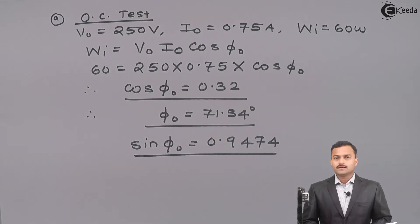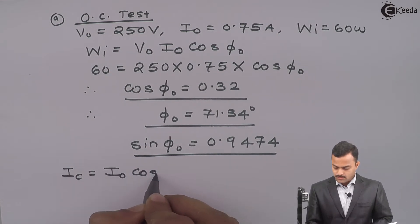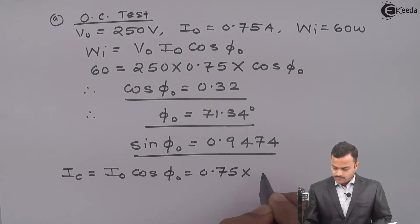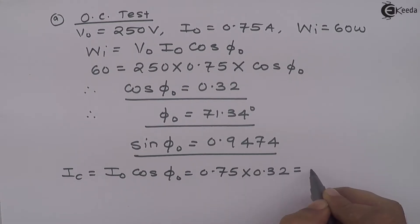Why is this required? Because we know IC core loss component of current is I0 cos φ0. So 0.75 multiplied by 0.32, the answer is 0.24 ampere.